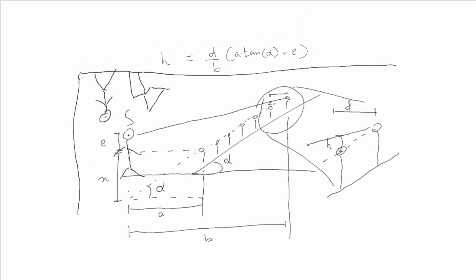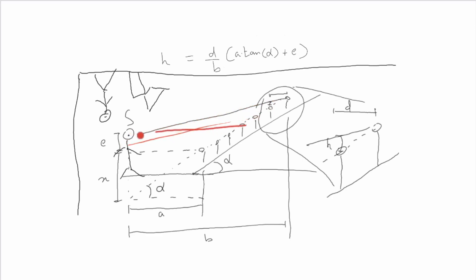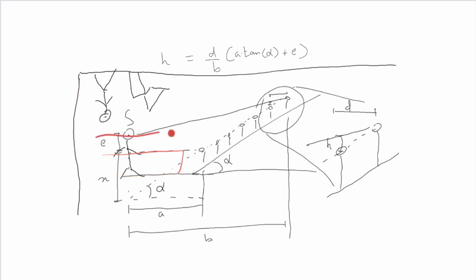Going back to our formula, the sight line clearance is also a function of the source height. In an existing construction, this formula can be used to decide the height of the audio system. If visibility is the question, the source is the subject on stage and we obviously cannot hang the person from the ceiling — but we can definitely increase the height of the stage, and the formula helps decide by how much.